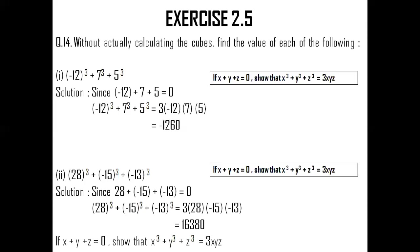Likewise, the second sum is 28 whole cube plus minus 15 whole cube plus minus 13 whole cube. The same way as the first question — first check whether x plus y plus z is 0: 28 plus minus 15 plus minus 13 is 0. Then simply put the value 3xyz, that is 3 into 28 into minus 15 into minus 13, which happens to be 16,380. You can see how a single algebraic identity is used in different manners to solve different kinds of sums.